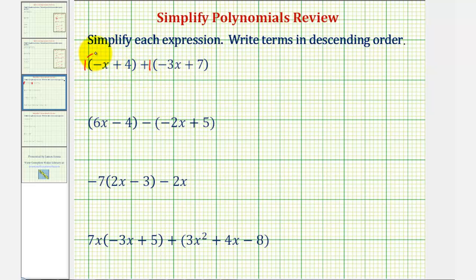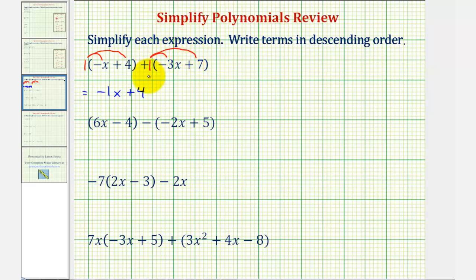So if we distribute a positive one here, we would have negative x, or negative one x, plus four. And because we have addition, we're distributing a positive one here as well, so we'd have plus negative three x, or just minus three x, plus seven.